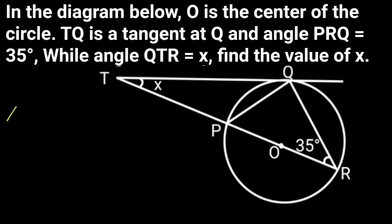Solution: Angle QTR, which is X, equals 180 degrees minus angle TQR plus 35 degrees. Reason: Sum of angles in a triangle.